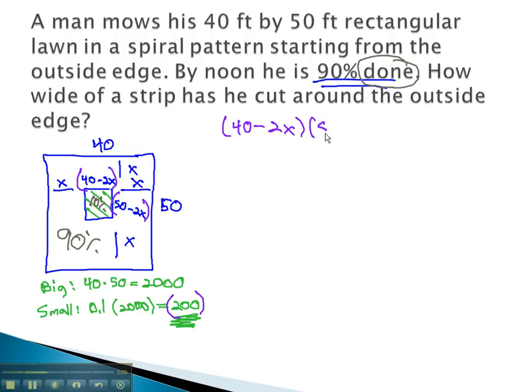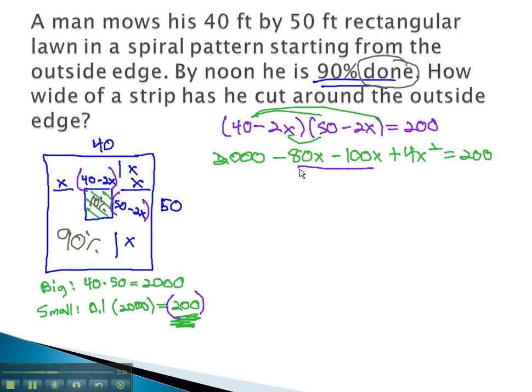40 minus 2x, times 50 minus 2x, is equal to 200. We can start solving by using FOIL to get 40 times 50, or 2,000, minus 80x, minus 100x, plus 4x squared, equals 200. Combining like terms gives us 4x squared, minus 180x, plus 2,000, equals 200.